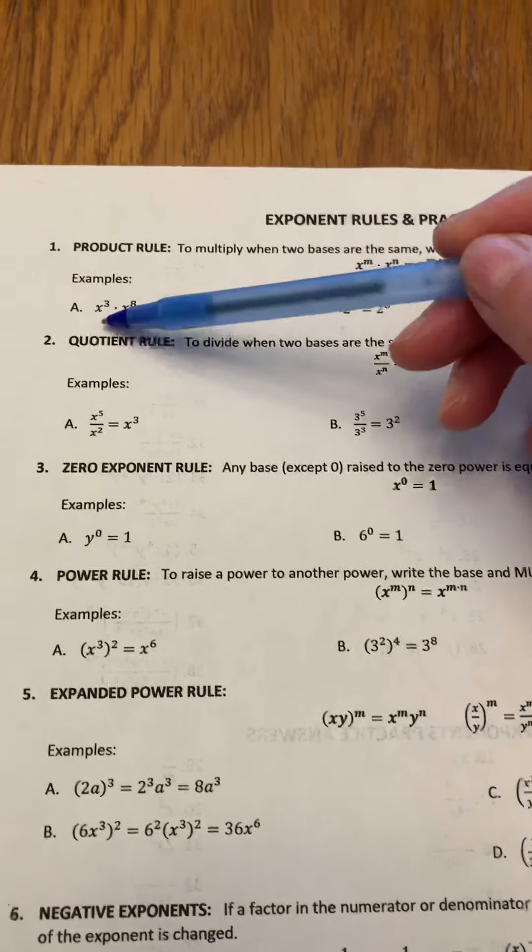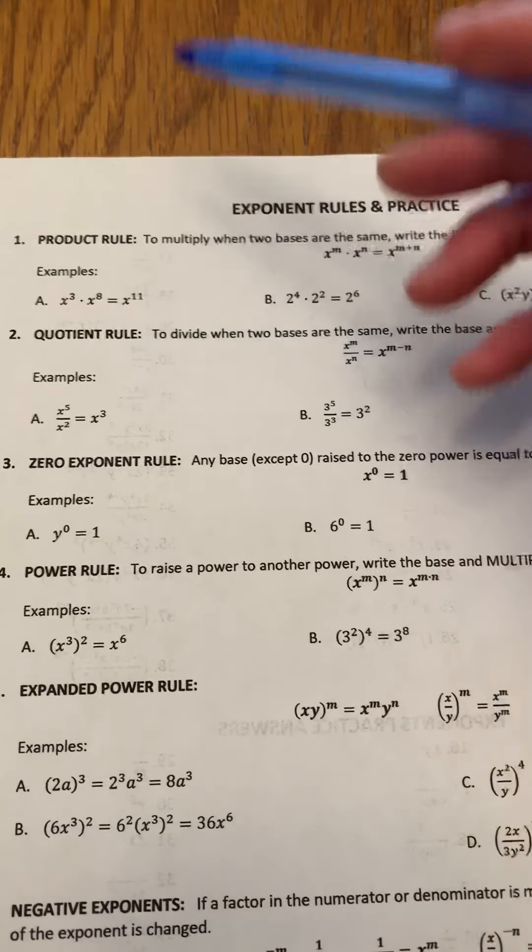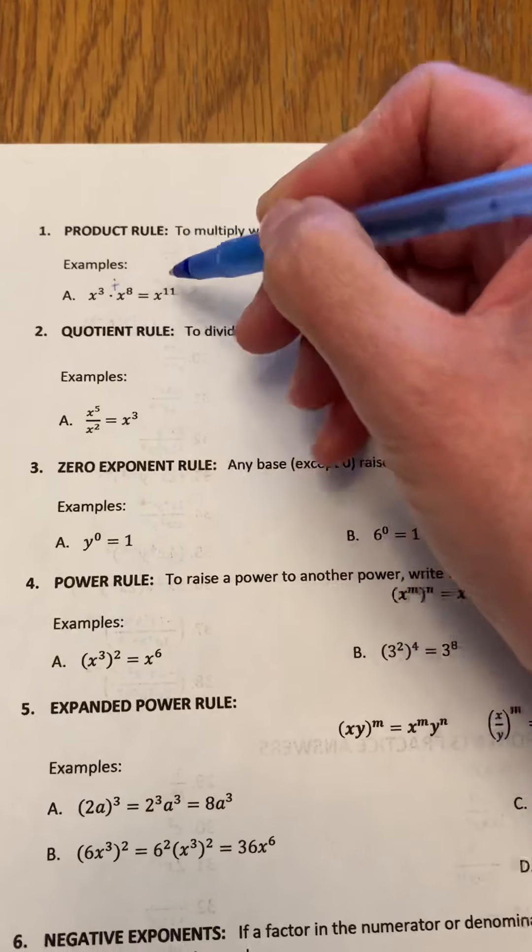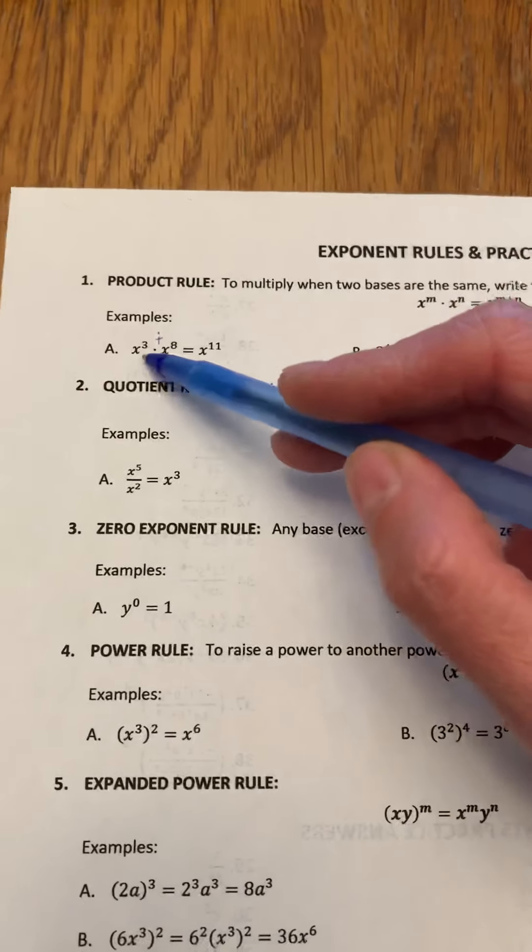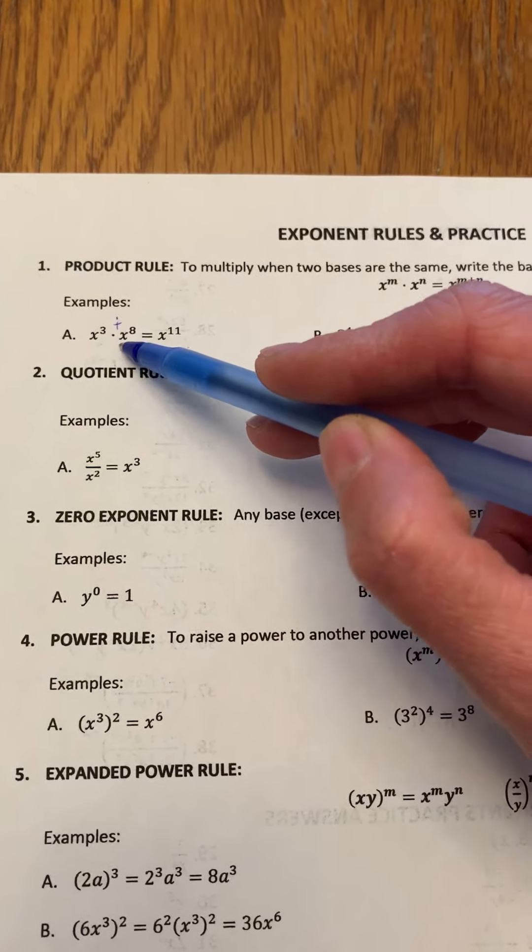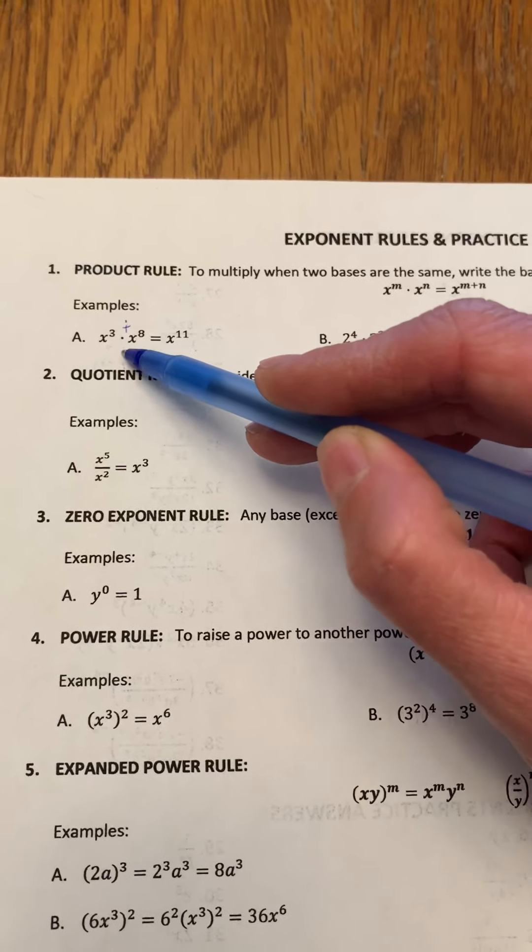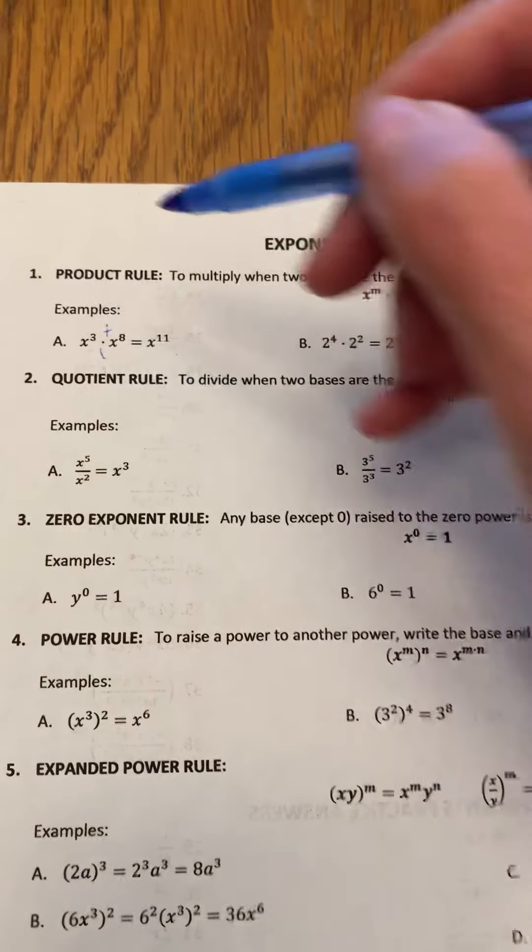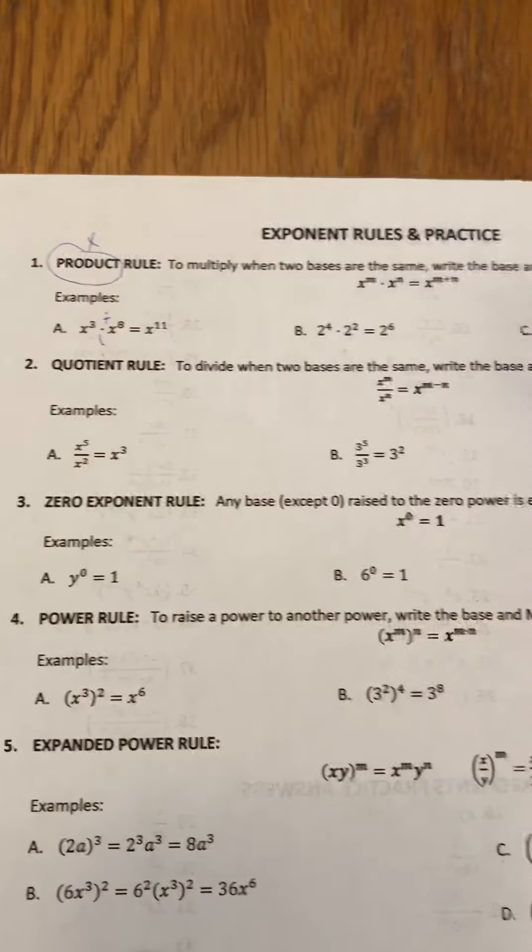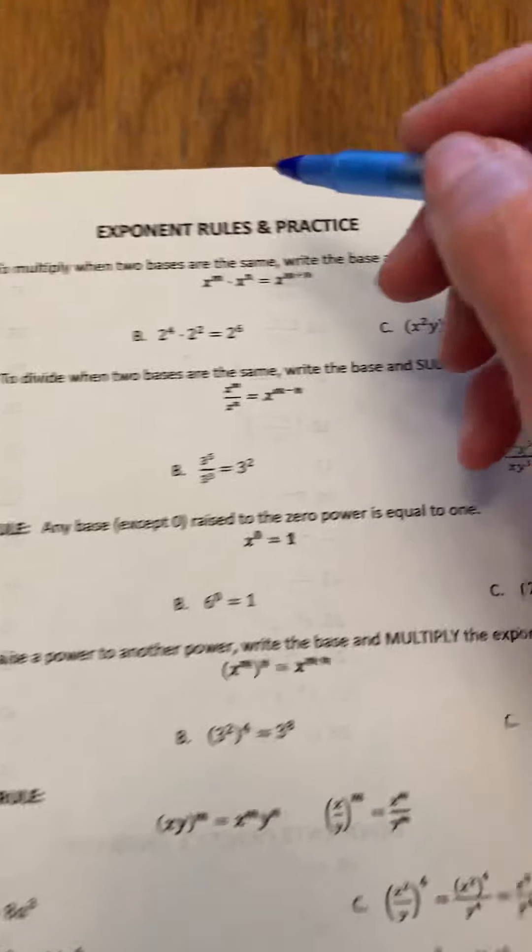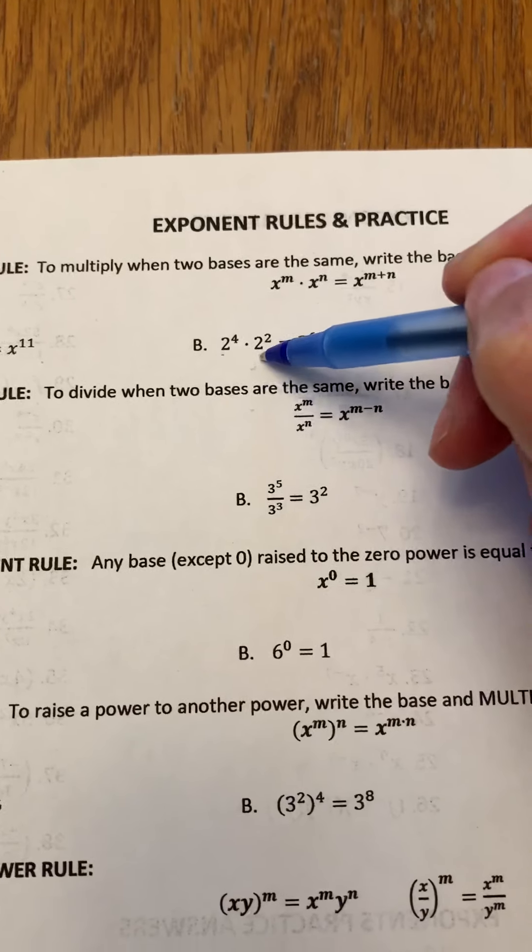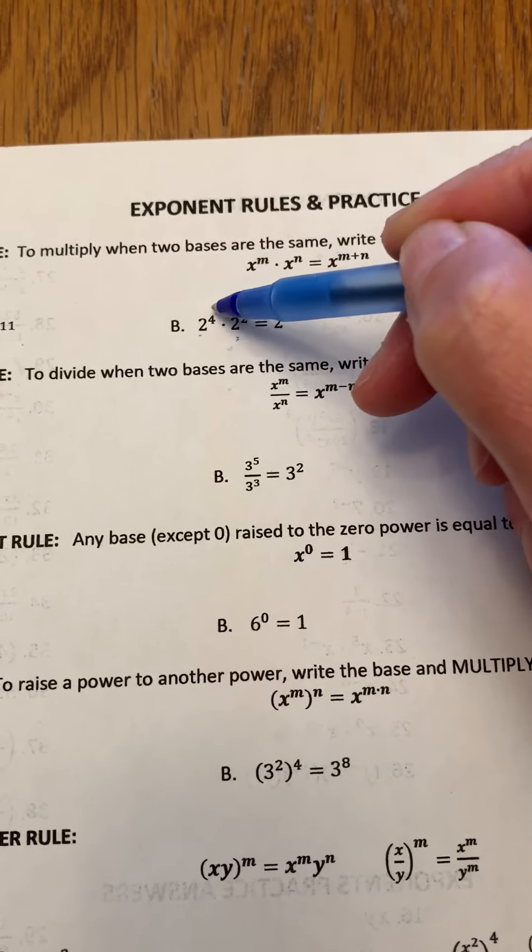We've got the product rule that comes first, and we know that when we have bases that are the same, we can simply shortcut by adding the exponents. We keep the base the same and add the exponents. So x to the power of 3, or x cubed as we call it, times—and remember it has to be a multiplication, that's why it's called the product rule—we have to be multiplying times x to the exponent 8, which equals x to the exponent 11.